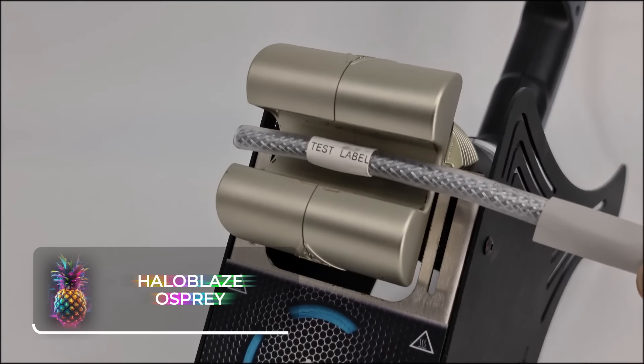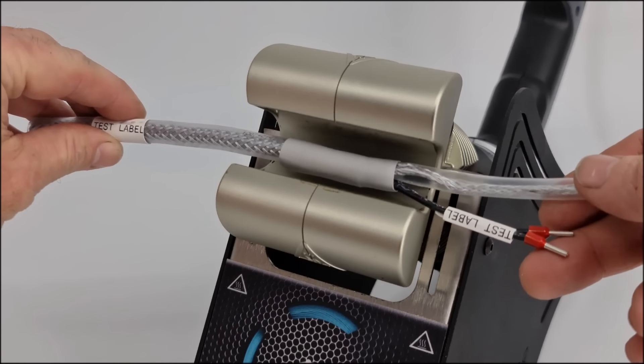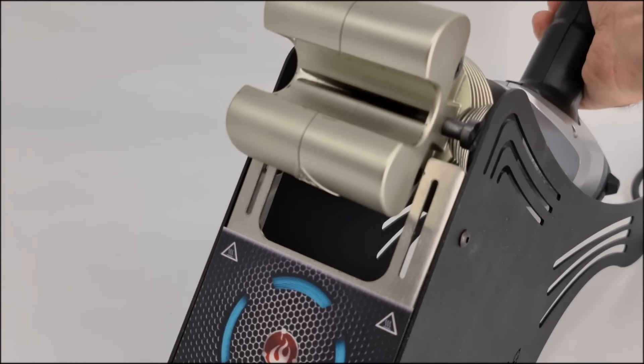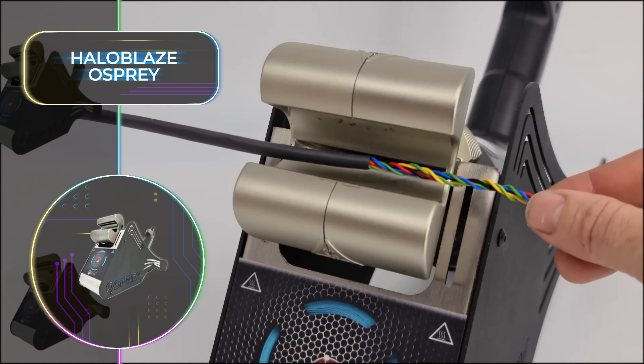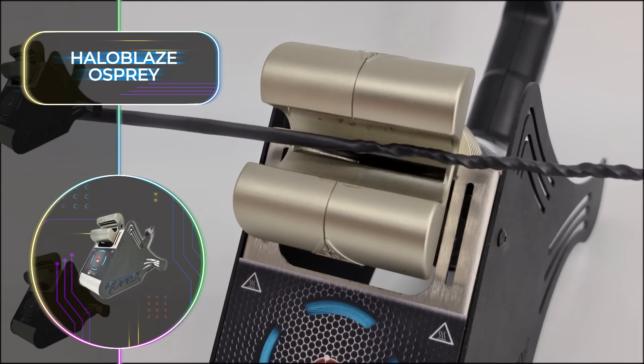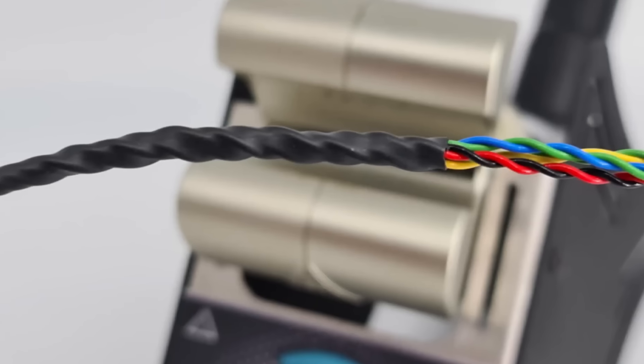Halo Blaze Osprey. The Halo Blaze Osprey is a truly groundbreaking innovation in heat shrink tubing processing technology. It consists of a base and a heat gun. With its outstanding 360-degree shrinking capabilities and increased safety features, it delivers consistent, high-quality results and effectively eliminates the need to rotate treated elements, thereby streamlining the entire process like never before.